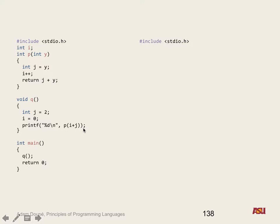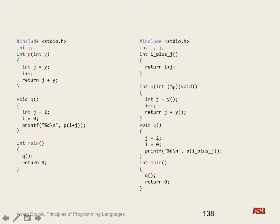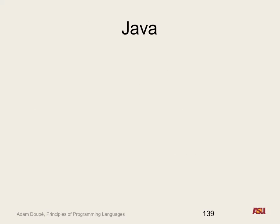In our main function we just call q. We can actually simulate this — on the left is our pass by name program. But we can get these exact same semantics with pass by value if, instead of y being an integer, we evaluate the expression that was passed in every time y is used. In essence, we turn the i plus j expression into a function. Every time this function is called we compute a brand new i plus j. So p takes in a y parameter which is a function pointer, and instead of an int, every time we were going to use y we call y as a function. This way we can compile this and get pass by name semantics, producing the same output 5.